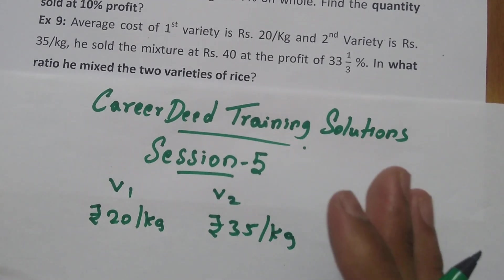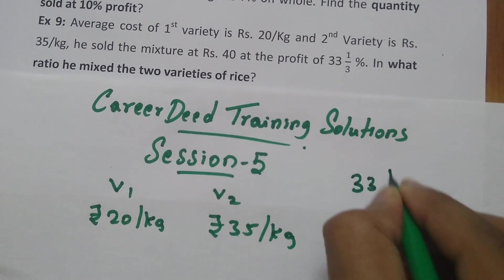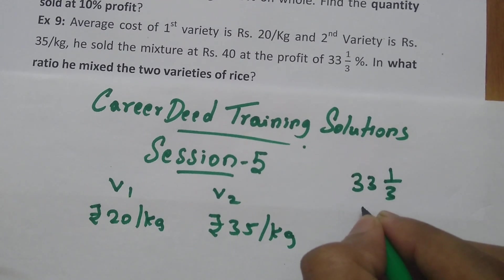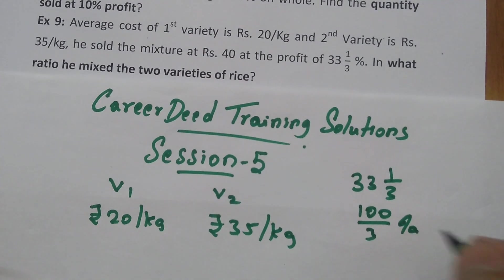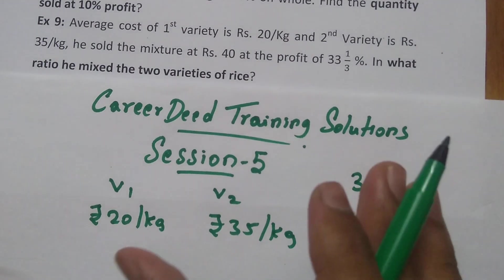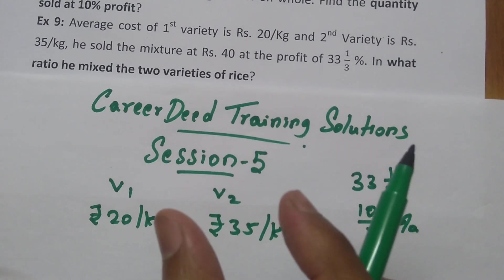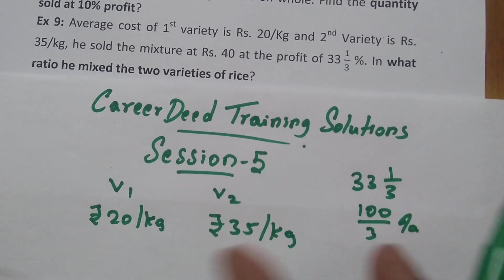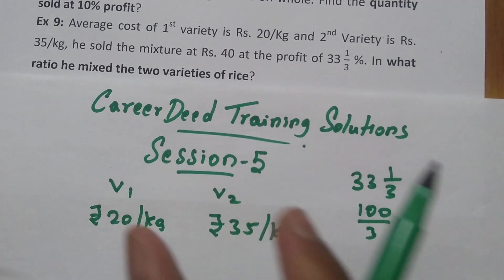You mixed both in certain proportion and sold for Rs. 40 per kg so that you are getting 33⅓%. So 33⅓% means 3×33=99, 99+1=100. So 100/3% is the total profit while selling this rice mixture. If it is 100/3% profit, assume you sold the product at 10% profit. It means you sold the product at 110% where the 100% is cost price and 10% is profit. So 110% is the selling price percentage.